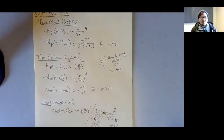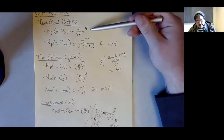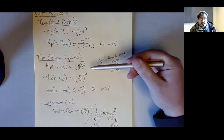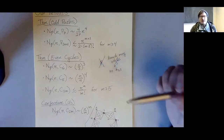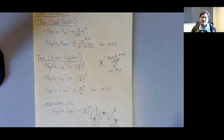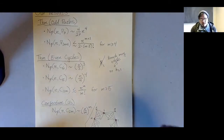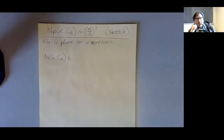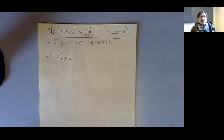I'll ask if there are any questions before going on. Now I want to tell you about even cycles — specifically a sketch proof for the maximum number of C_6s in a planar graph, mostly because even cycles are easier than odd paths in many regards. Let's fix a planar graph G on n vertices and get a bound on the number of copies of C_6.